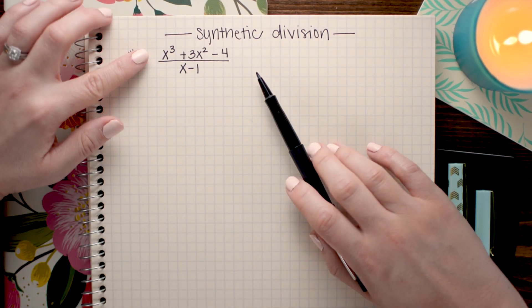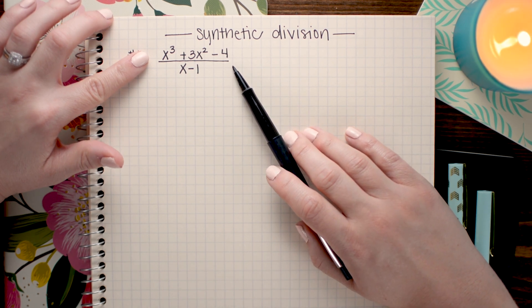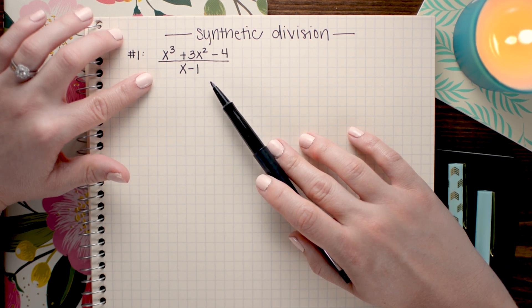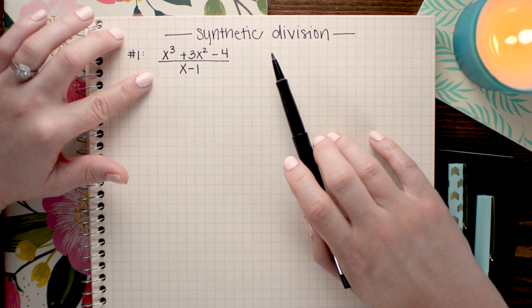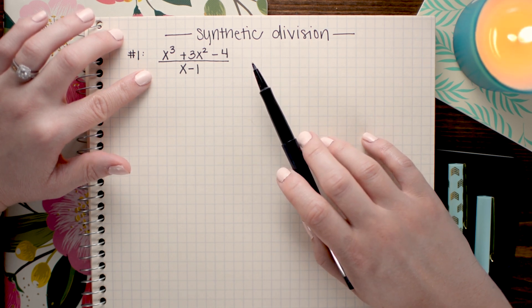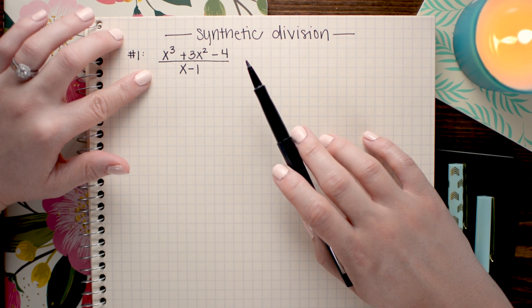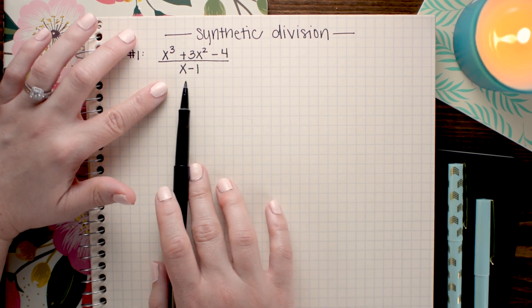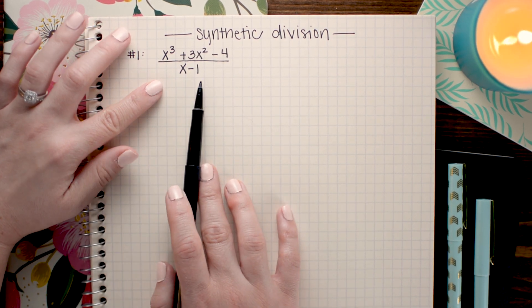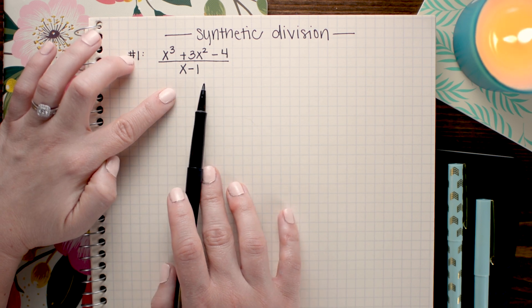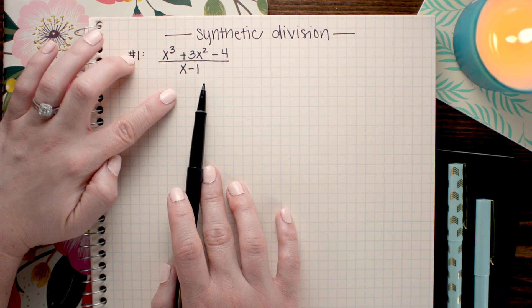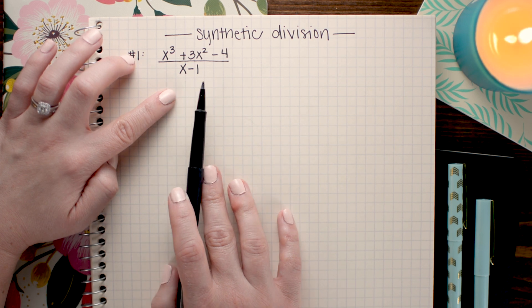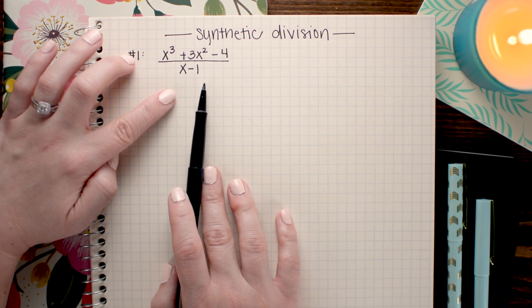In our first problem today we are going to be dividing the polynomial x cubed plus 3x squared minus 4 by the binomial x minus 1. And we're going to be doing this using a process called synthetic division. Synthetic division only works in certain scenarios. And the scenario you need to have to be allowed to use synthetic division is you have to have a divisor, so a polynomial being divided by a value that looks like this one, so that it's x plus or minus a number. That means that you cannot have x squared or x cubed or any other power of x in the divisor, so it has to just be x plus or minus a number. But once you check to make sure you have that, you're good to go.